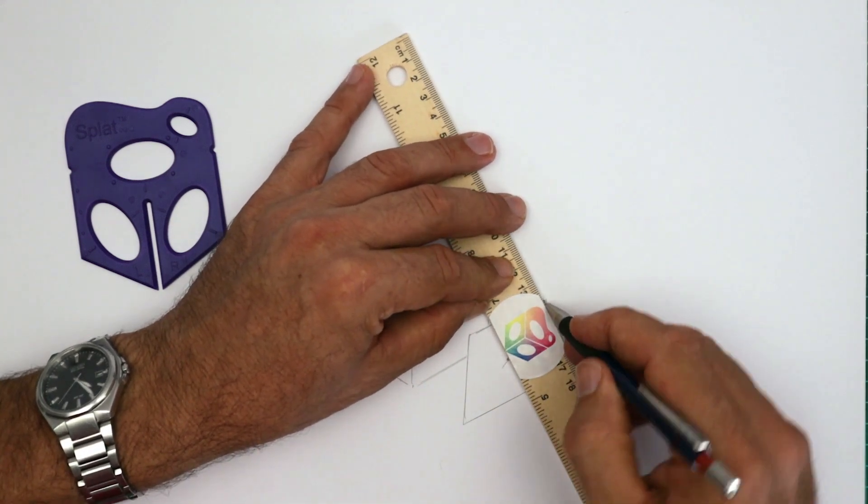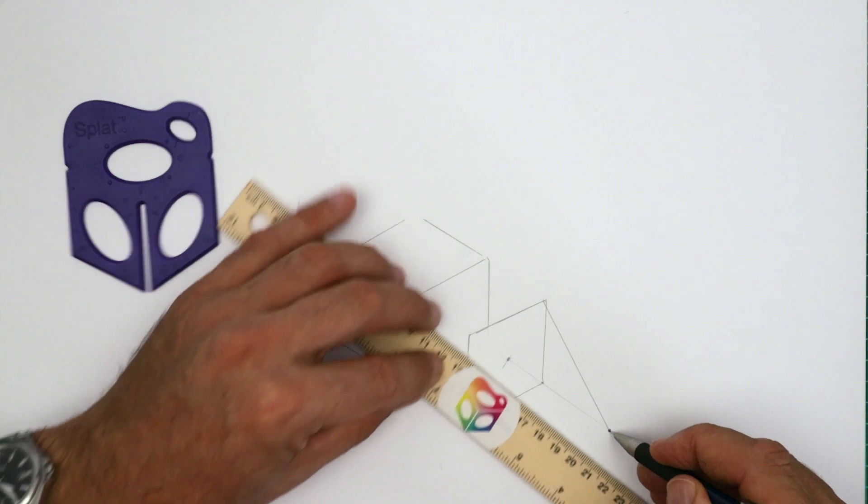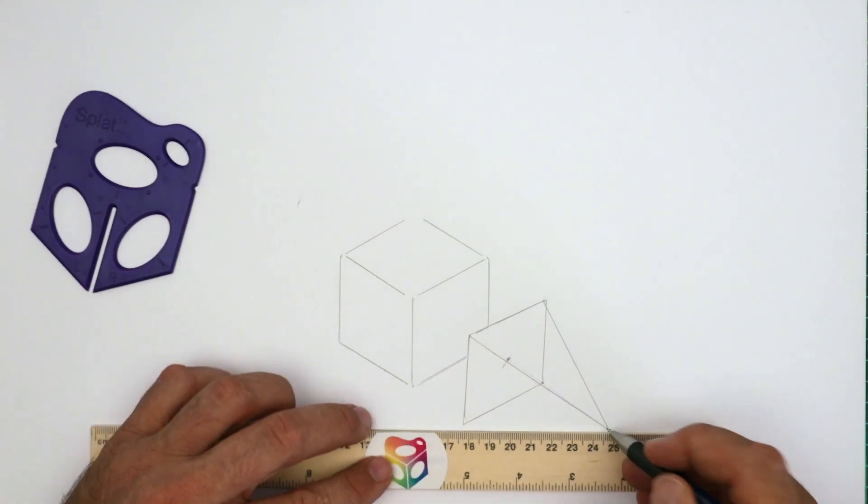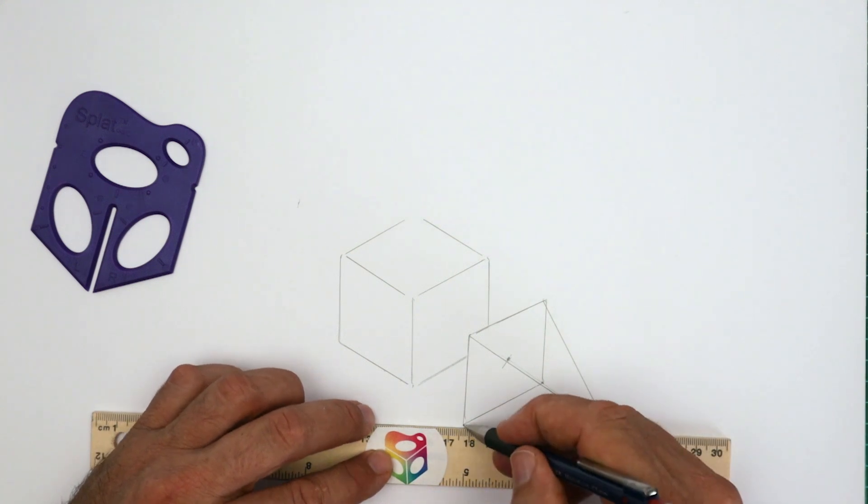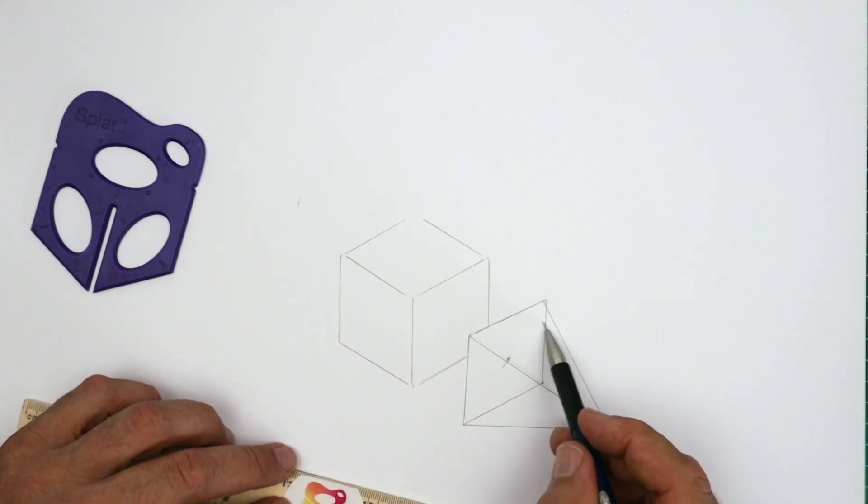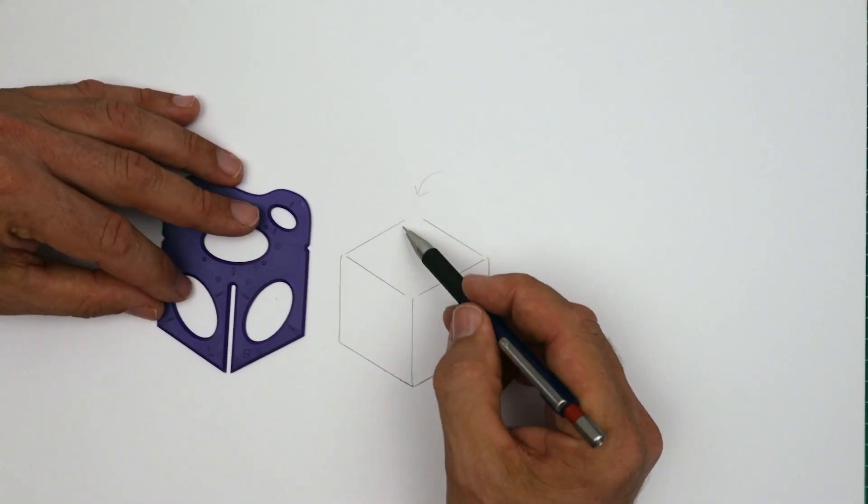And we join the apex to three of the corners of the base. And of course we don't need to draw the fourth one because it's hidden behind. So that's how easy it is to draw a pyramid in the isometric direction. Let's rub a few hidden lines out there.